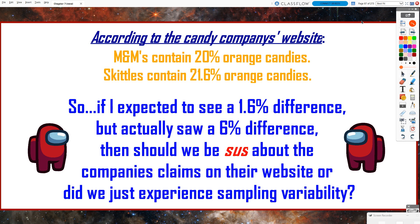If I expected to see a 1.6% difference — because that's the difference in the company's claims — but I actually saw a 6% difference, that seems like a much bigger difference. 6% versus 1.6% is a little over three times bigger. Should we be suspicious about the company's claims, or did we just experience sampling variability? Maybe both of my samples just naturally contained a different amount of orange candies. Based on my one sample, should I be suspicious? That's what we're going to test.